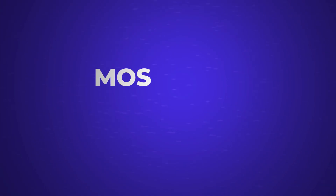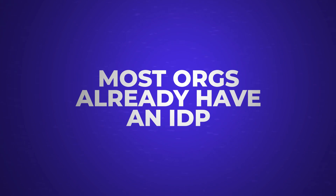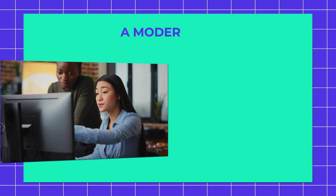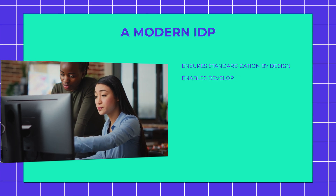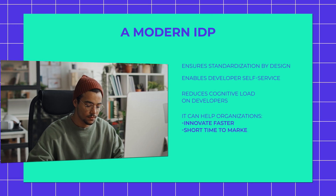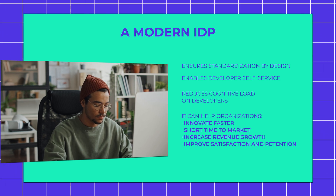Well-designed IDPs follow a platform-as-a-product approach where a platform team builds, maintains, and continuously improves the IDP using product management principles and best practices. So why would you need an IDP in the first place? Most organizations already have an IDP, actually, whether they realize it or not. The question is whether it's a scalable, enterprise-grade IDP. A modern IDP ensures standardization by design, enables developer self-service, and reduces cognitive load on developers. It can help organizations innovate faster, shorten time to market, increase revenue growth, and improve customer satisfaction and retention.